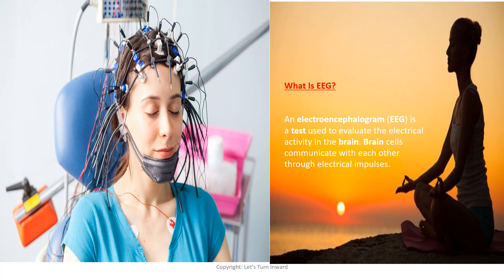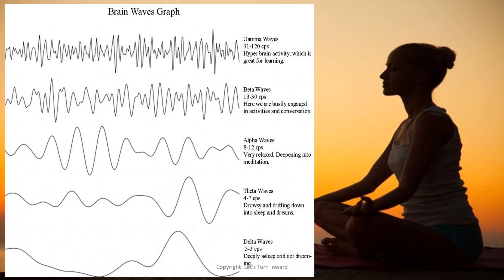The process of measuring brain waves is called EEG, as shown in the picture — it measures and evaluates electrical activity in the brain. Researchers found five categories of waves by cycle per second: gamma waves at 31 to 120 cycles per second, representing hyper-focused states; beta waves at around 12 to 30 cycles per second, the normal wakeful state; alpha waves at 8 to 12 cycles per second, a state of relaxation; theta waves at 4 to 7 cycles per second; and delta waves, where brain activity falls to nearly zero, around 0.5 to 3 cycles per second.